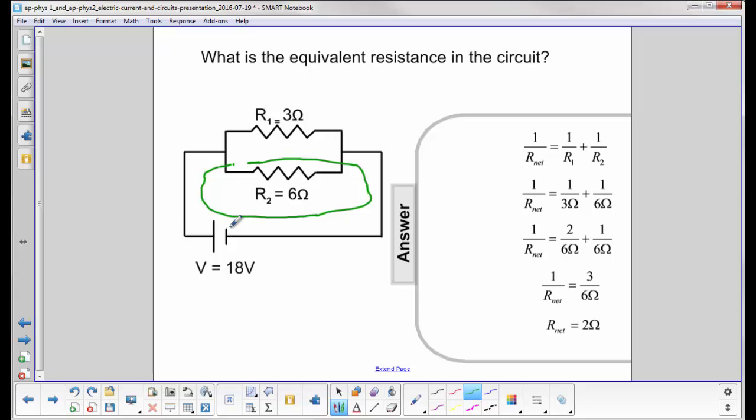I left this one out. If I drew another loop here, I left the 6 ohm out. Let's just draw another color here. How could I cover both of them?